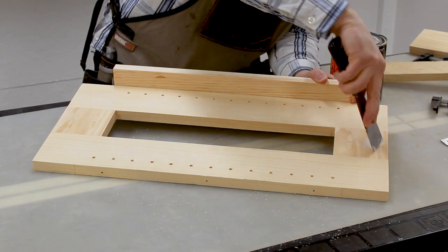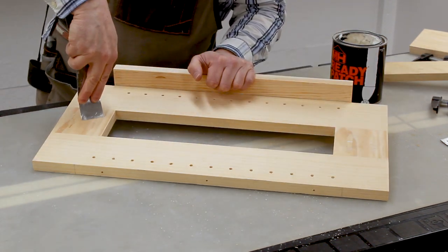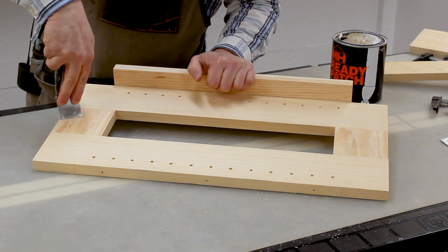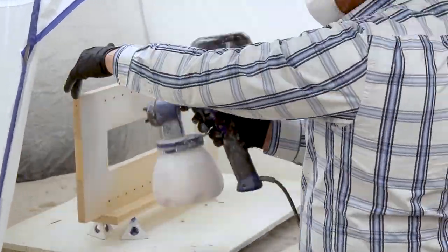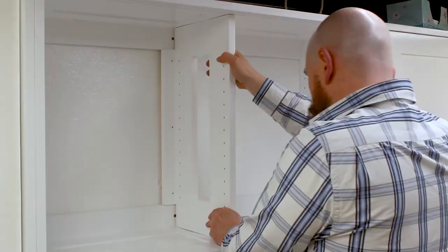Then I filled the gaps between the pocket hole plugs. I sprayed the divider with a coat of primer and 2 coats of paint. When the paint was dry, I attached the divider to the stud with 3 and a quarter inch screws.